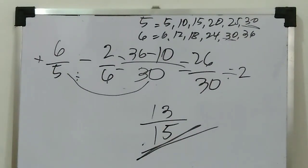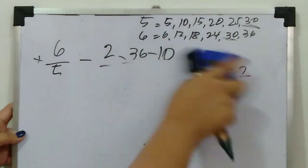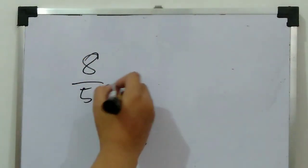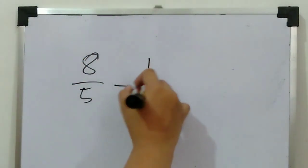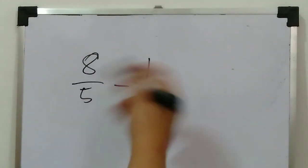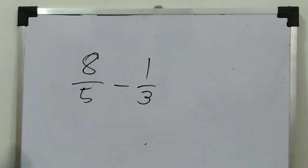Next, try to answer this one. Let's see if you understood what I taught. I want you to use the butterfly method. So, eight over five minus one-third. Try to answer it. Pause this video before you continue.